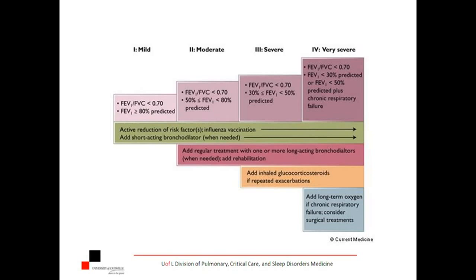For the very mild and moderate forms, obviously everyone needs vaccinations plus a short-acting bronchodilator like albuterol as needed. For the folks who are obstructed with an FEV1 between 50 and 80% — moderate — add regular treatment with a long-acting bronchodilator. When you get to the magic number of an FEV1 around 50% or less, this is when we start talking about adding inhaled glucocorticoids. This is a double-edged sword — we shouldn't add glucocorticoids willy-nilly.